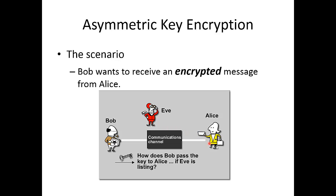So when Alice receives that public key, she just encrypts a message and sends it back through this communication channel. Bob receives it and uses a different key, called the private key — only available to him — to decrypt it. So Eve doesn't really have a chance to decrypt it at all because she doesn't have access to that private key.